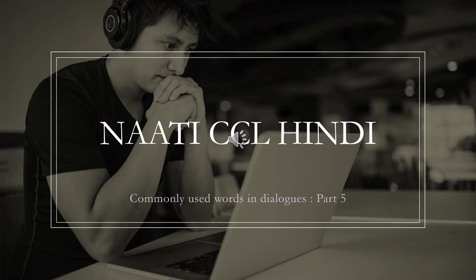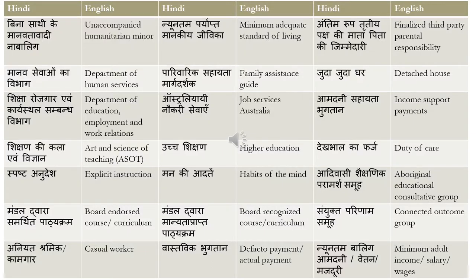Let's begin. The first word is 'Bina Sathi Ke Manavtavadi Nabalik' — this means 'unaccompanied humanitarian minor.' Nabalik is minor, who is not an adult. Manavtavadi is humanitarian, and Bina Sathi Ke is unaccompanied. So unaccompanied humanitarian minor is translated as Bina Sathi Ke Manavtavadi Nabalik.